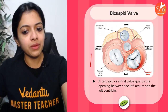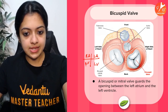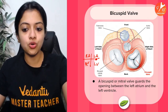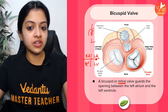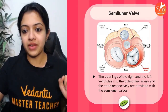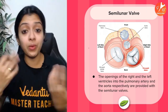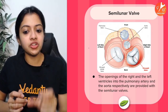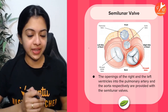Then comes the bicuspid valve, which we find between the left atrium and the left ventricle, also called the mitral valve. Remember LBL: left atrium, bicuspid valve, left ventricle. We also have semilunar valves — 'semi' means half, 'lunar' refers to moon, so pretty much a half-moon shape. These valves are found at the junction between the pulmonary artery and the right ventricle, and between the aorta and the left ventricle.